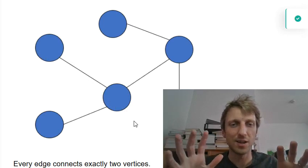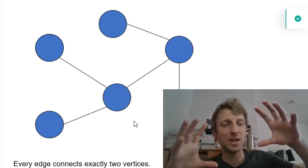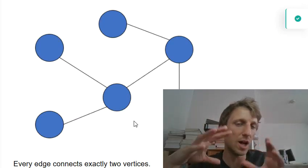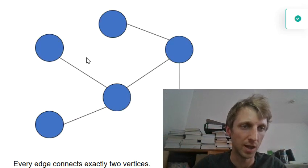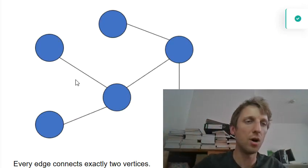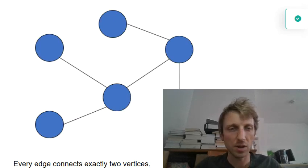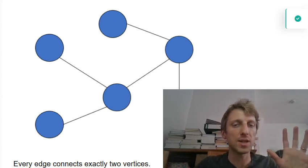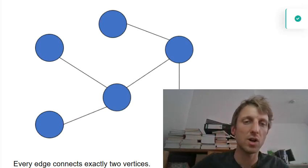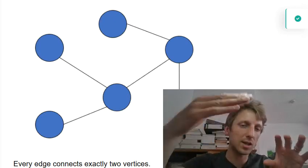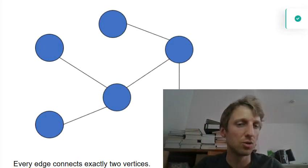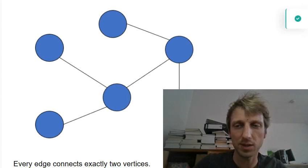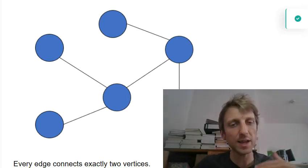In comparison, a hypergraph allows each edge to connect an arbitrary number of vertices, but for a normal graph each edge connects exactly two vertices. This creates a network of entities. For example, in the Facebook social media graph, the vertices are users connected via friendship relations — Facebook models the global friendship graph using this data structure with vertices and edges.